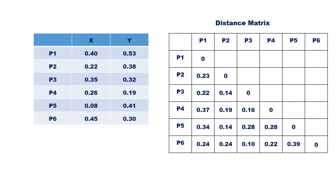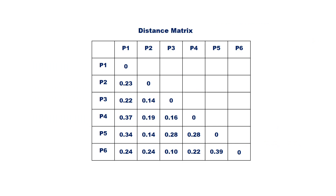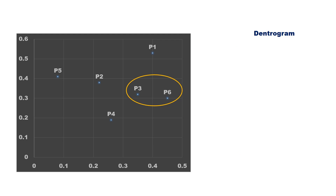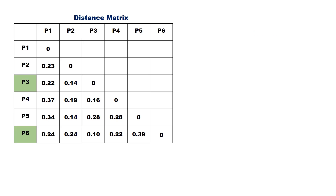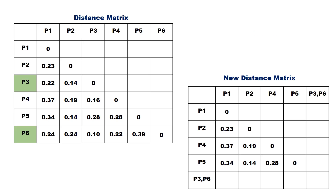In this problem, we are going to use the average linkage technique. Find the smallest distance — it is 0.10, which is the distance between points P3 and P6. Merge P3 and P6 to form the first cluster and draw the corresponding dendrogram. Now we need to recalculate the distance matrix. To obtain the new distance matrix, remove the entries of P3 and P6 and replace them with a new entry P3, P6.